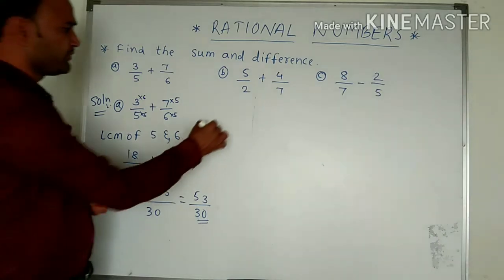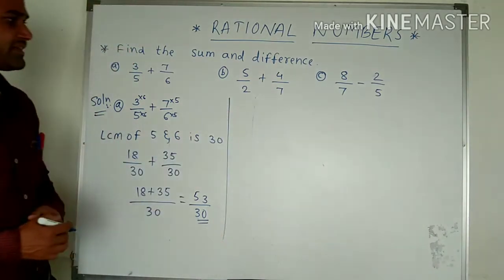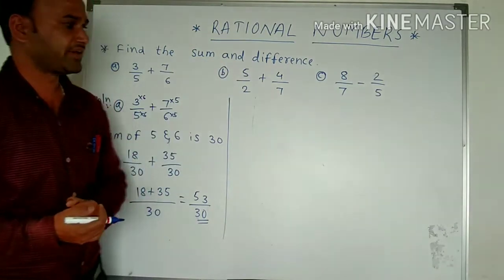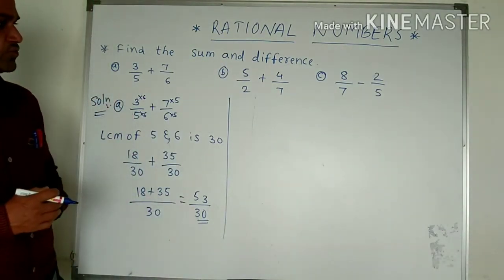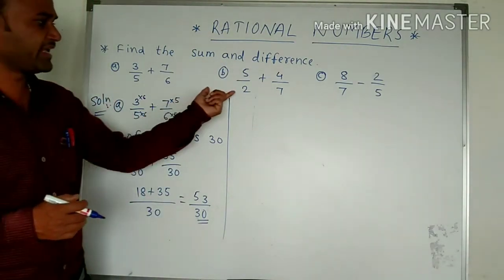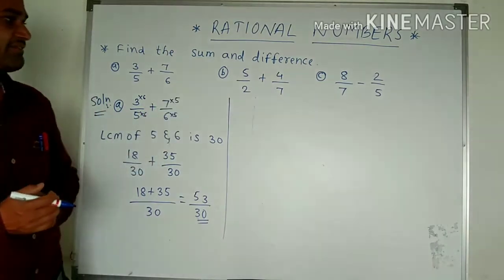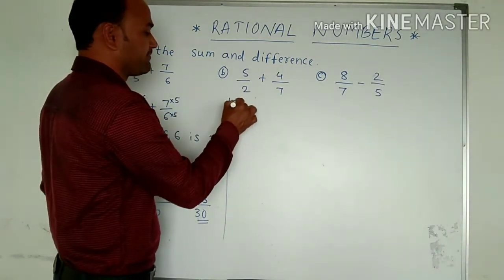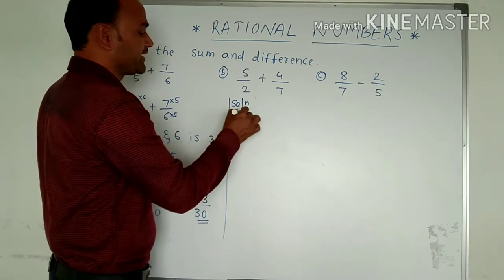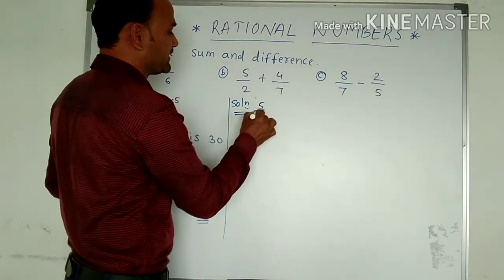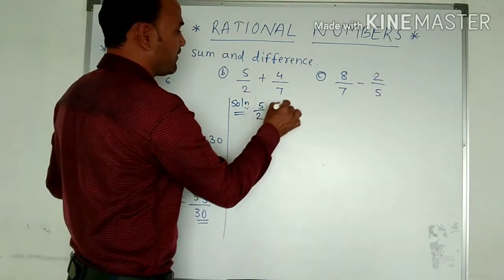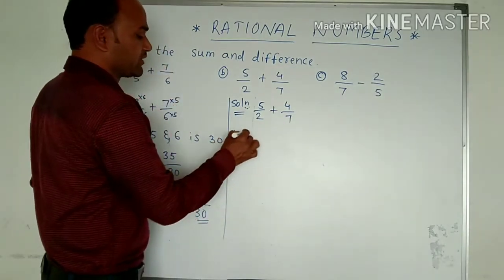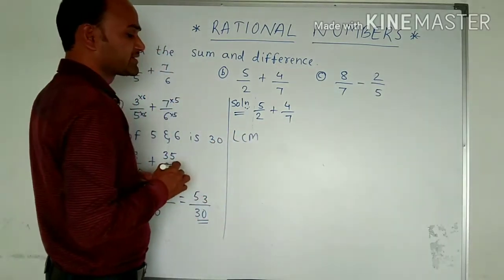In the same way, we will see another example: 5 upon 2 plus 4 upon 7. Again, what we have to do is make the denominators — 2 and 7 — the same. For making the denominator the same, we have to find out the LCM of the denominators. The denominators are 2 and 7.